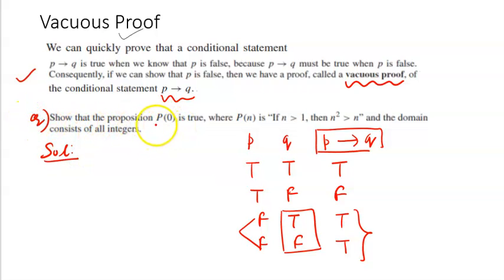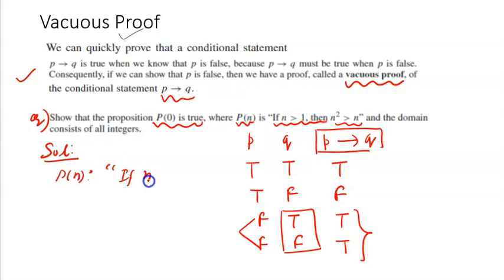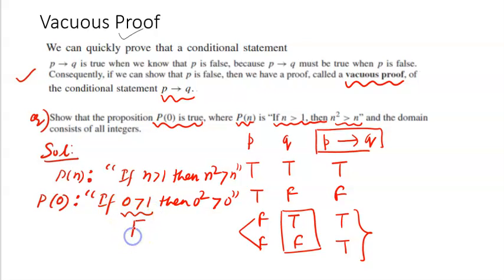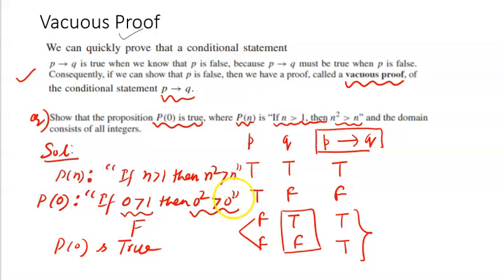For example, suppose we have to show that P(0) is true, where P(n) is: if n > 1, then n² > n. P(0) becomes: if 0 > 1, then 0² > 0. Now, '0 > 1' is a false statement — we all know 0 < 1. Since the hypothesis p is false, P(0) is true by vacuous proof, even though the conclusion '0² > 0' is also not true.